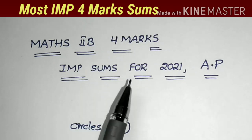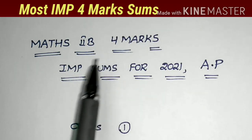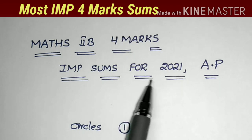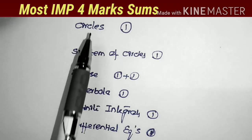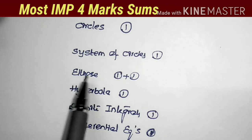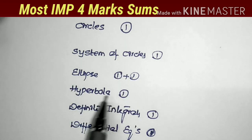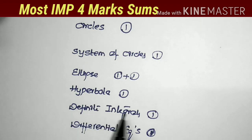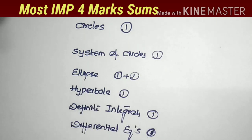This is the most important video for inter-secondary students. In this video, I show you the 4-mark IMB sums for 2021 Andhra Pradesh public examination. The four 4-mark problems come from these chapters: circles (1 problem), system of circles (1 problem), ellipse (2 problems), hyperbola (1 problem), definite integrals (1 problem), and differential equations (1 problem) — total seven problems. We have to attempt only five out of seven.